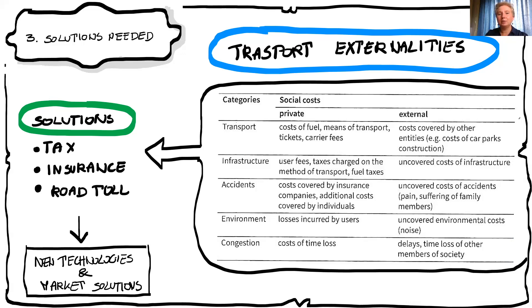Also, when companies have to pay extra environmental taxes, they are more willing to develop new technologies and invest in research and development. They finance new solutions, and it becomes easier to find those technologies. Market solutions are also connected to customer needs and how customers see things — and the next step in our lecture will be the new models of economics that take all these problems into account, knowing that taxes and tolls alone are not enough to improve the situation.